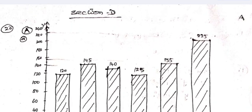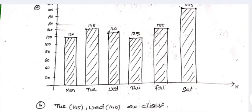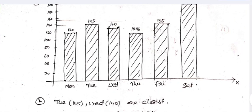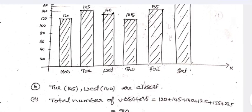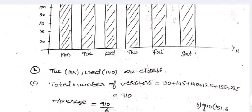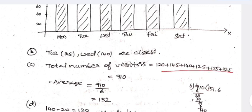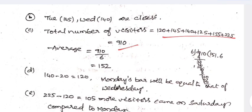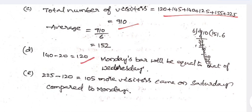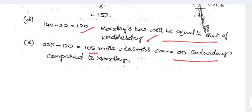Section D: the bar graph is drawn. Tuesday has 145 visitors and Wednesday has 140 — these two days are closest. Total number of visitors divided by 6 gives the average, which is 152. Wednesday's new value is 140 minus 20 equals 120, so Monday's bar equals Wednesday's. Saturday had 225 visitors; 225 minus 120 equals 105 — so 105 more visitors came on Saturday compared to Monday.